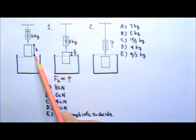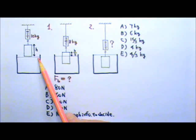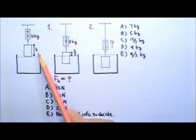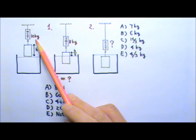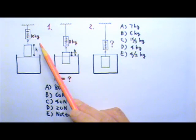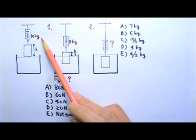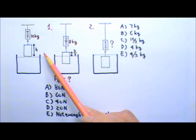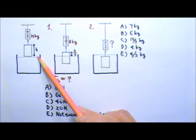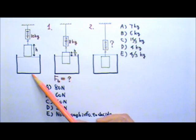A cylindrical block with height h is hung under a scale. The scale reads 10 kg when the block is completely above the surface of an unknown liquid.